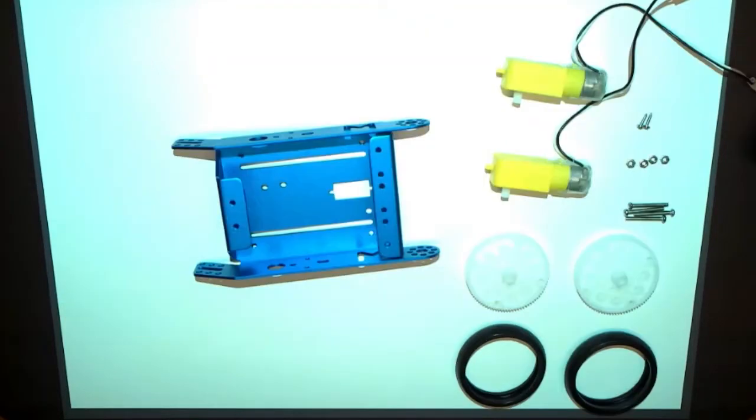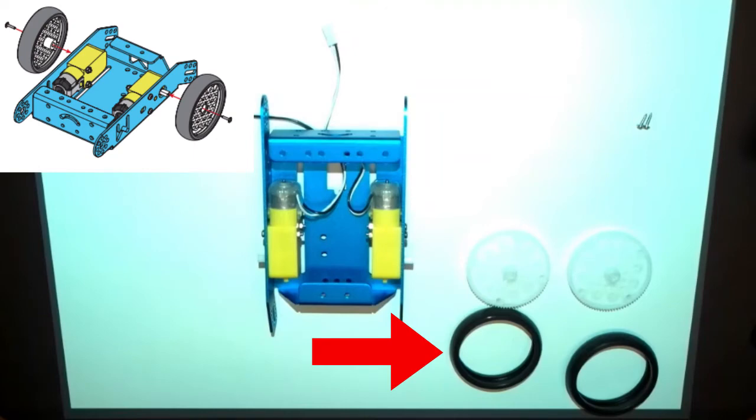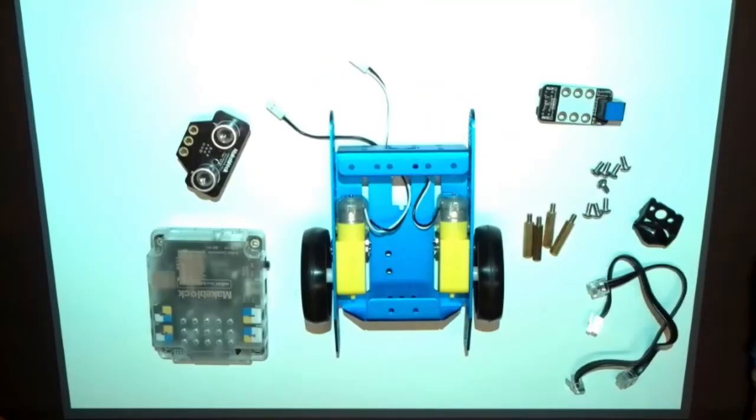We'll be using these parts to assemble the chassis. Line up the motors with the holes on the side of the chassis and screw them in as shown. Don't forget to install the tires.